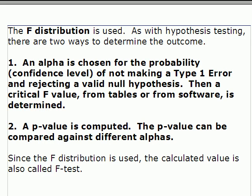In the past, for hypothesis testing we used normal distributions and the Student t-distribution. Here we're going to use what's called the F distribution, which is a combination of chi-squared distributions. The test will always be a one-tailed, right-tailed test. The F distribution, like the chi-squared distribution, is always positive. It looks like this — big at the start and tailing off to the right, similar to a chi-squared distribution.